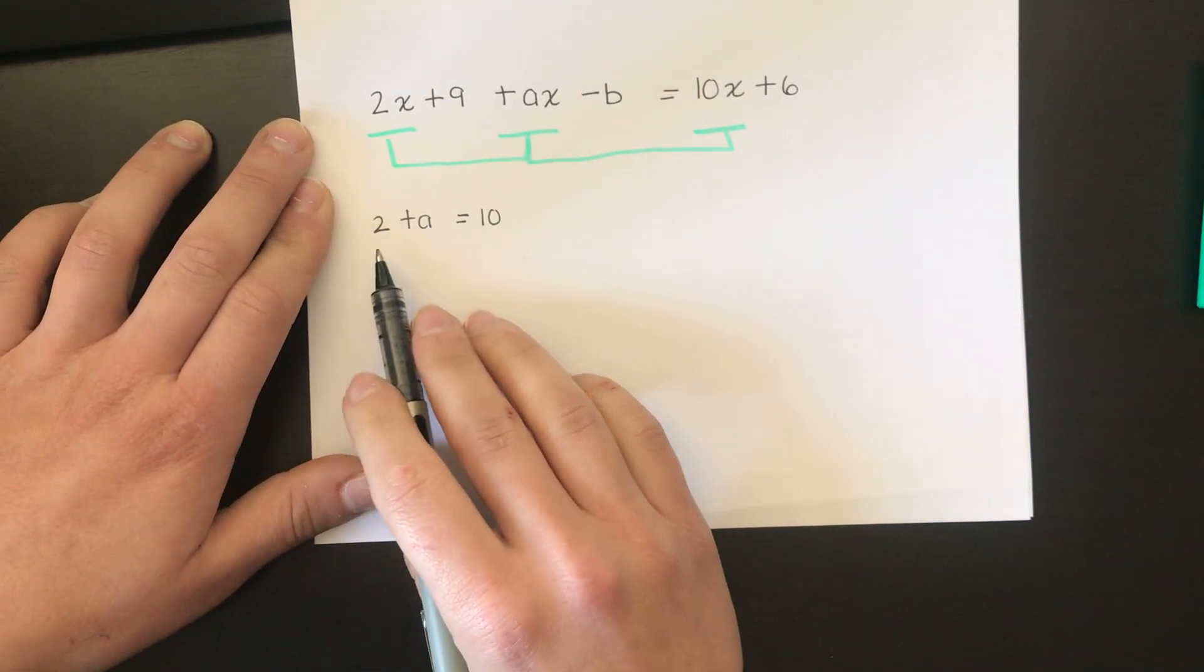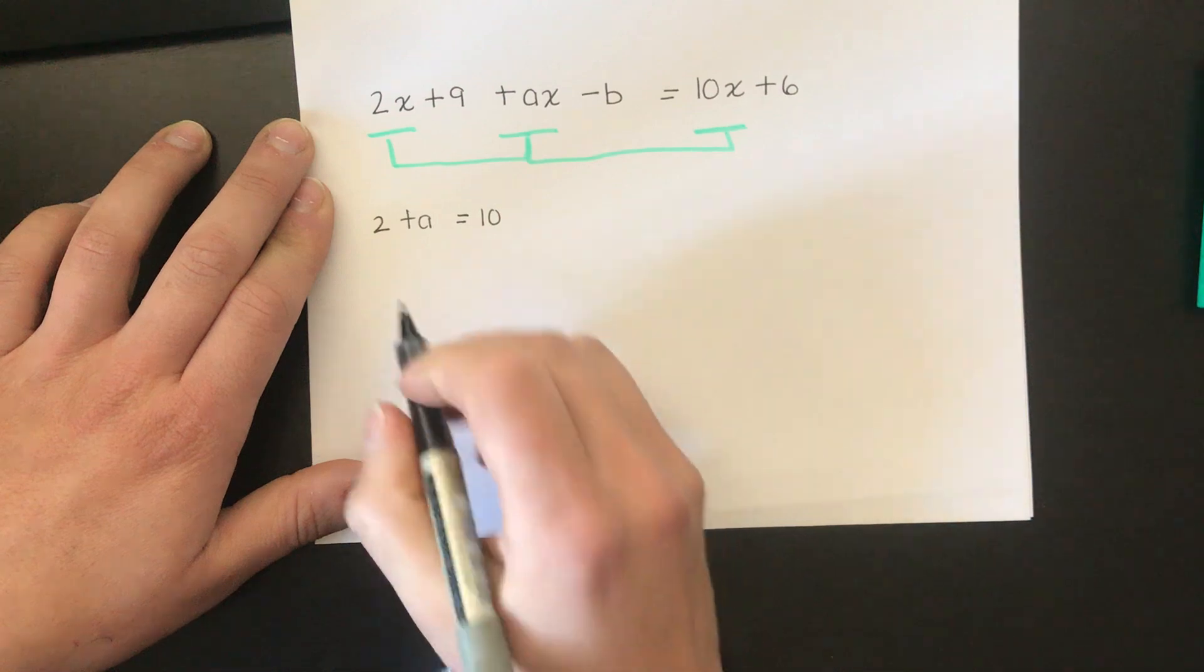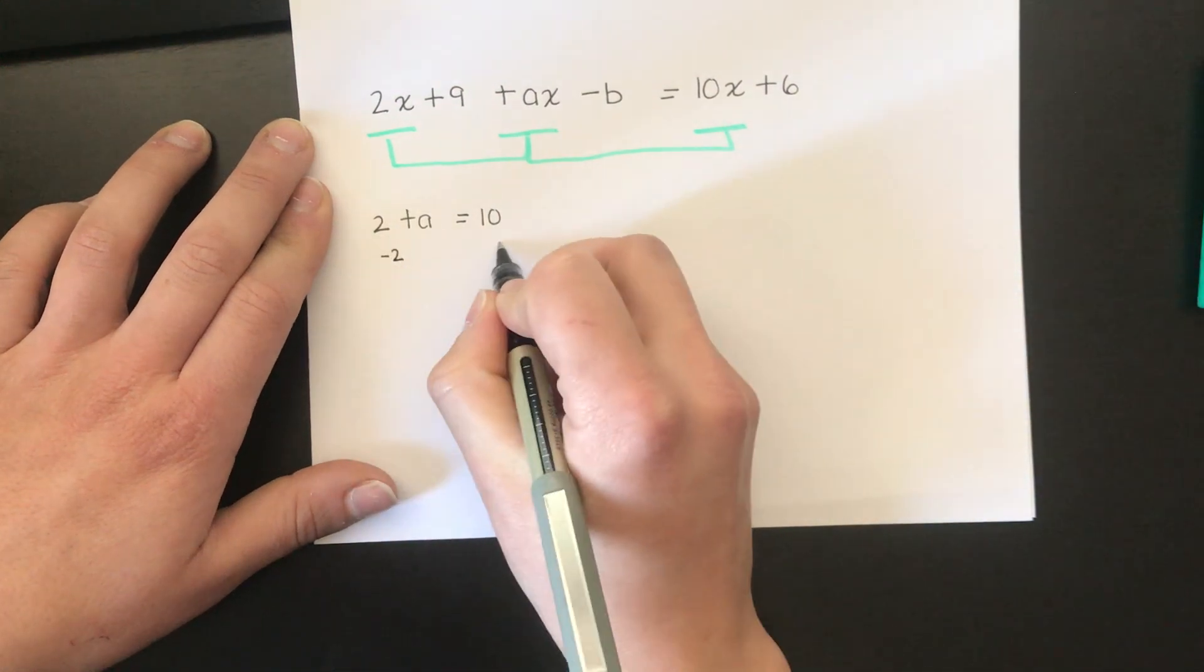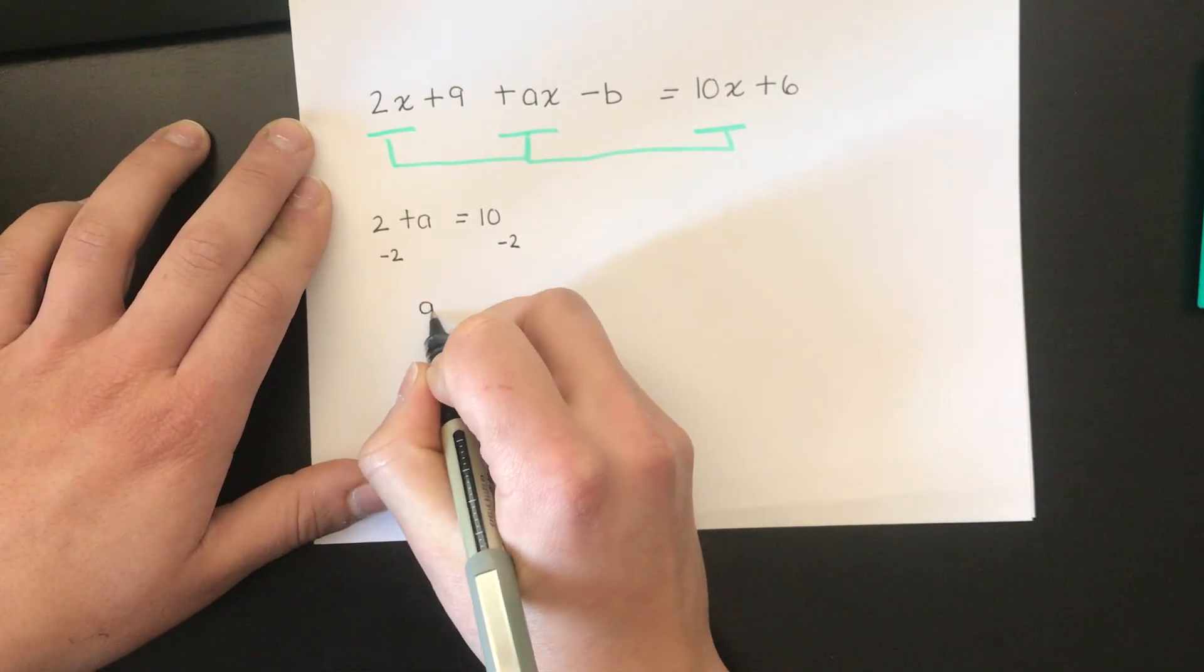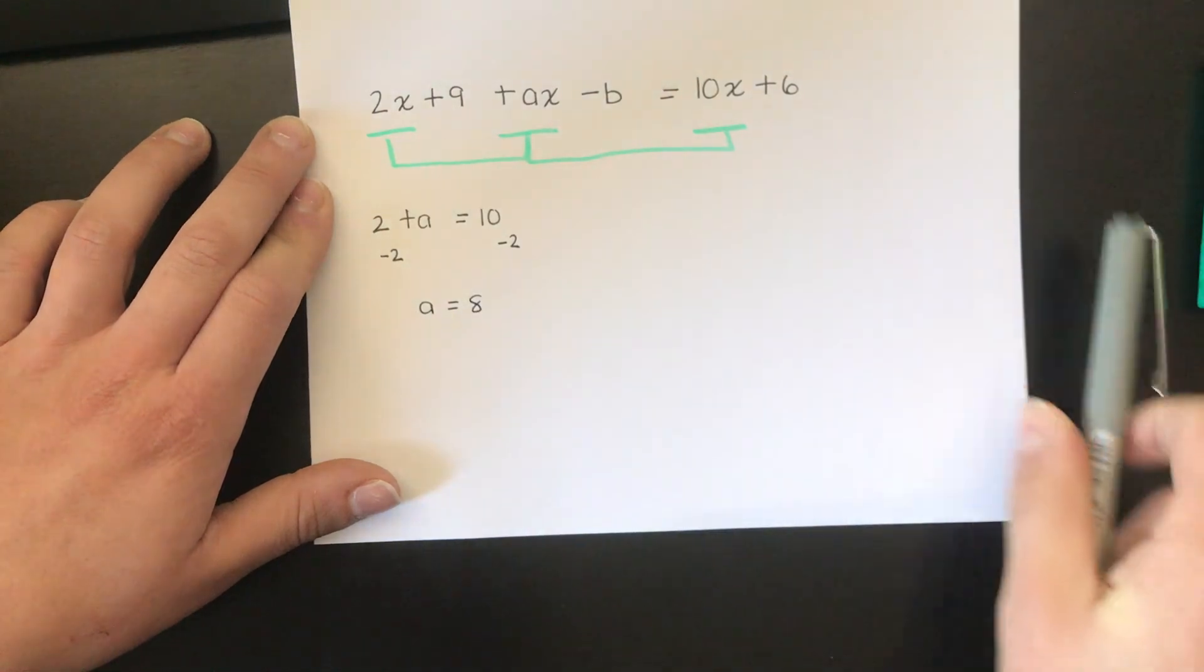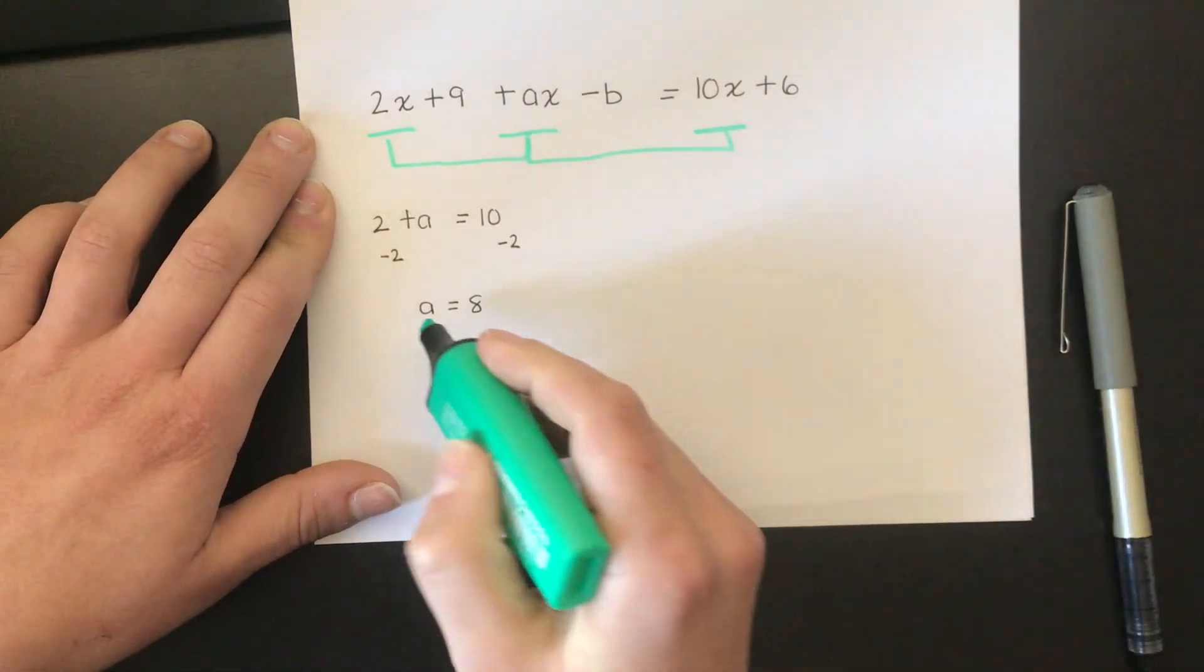I can go ahead and solve this now. It says 2 + a = 10. So I can subtract 2 from both sides and I'm left with a = 8. There's my answer, a = 8.